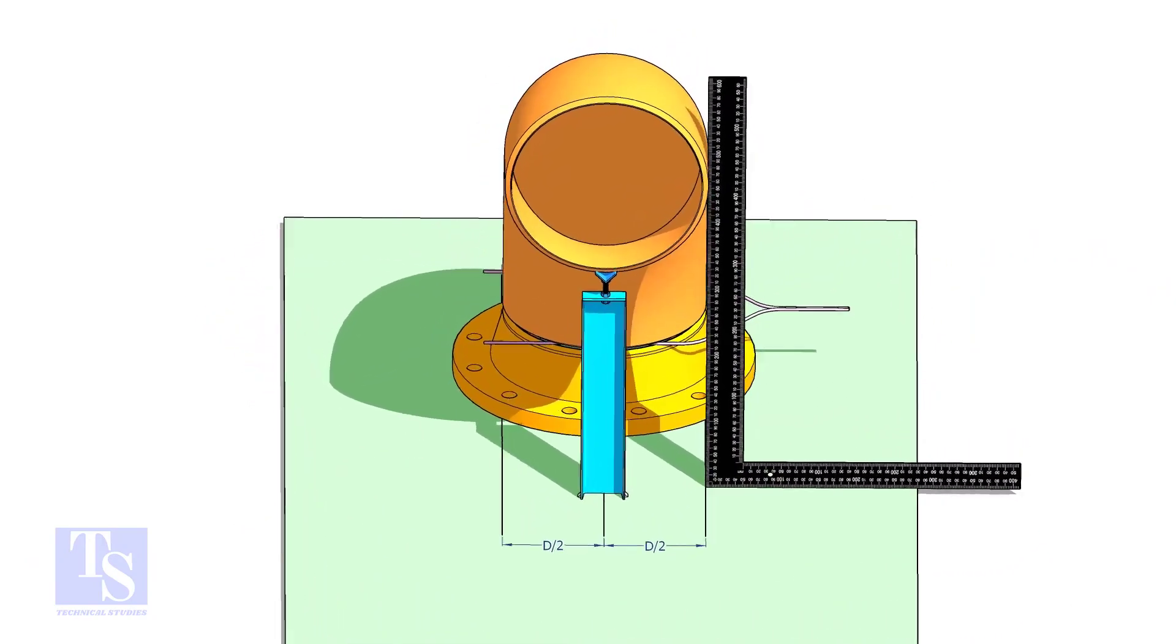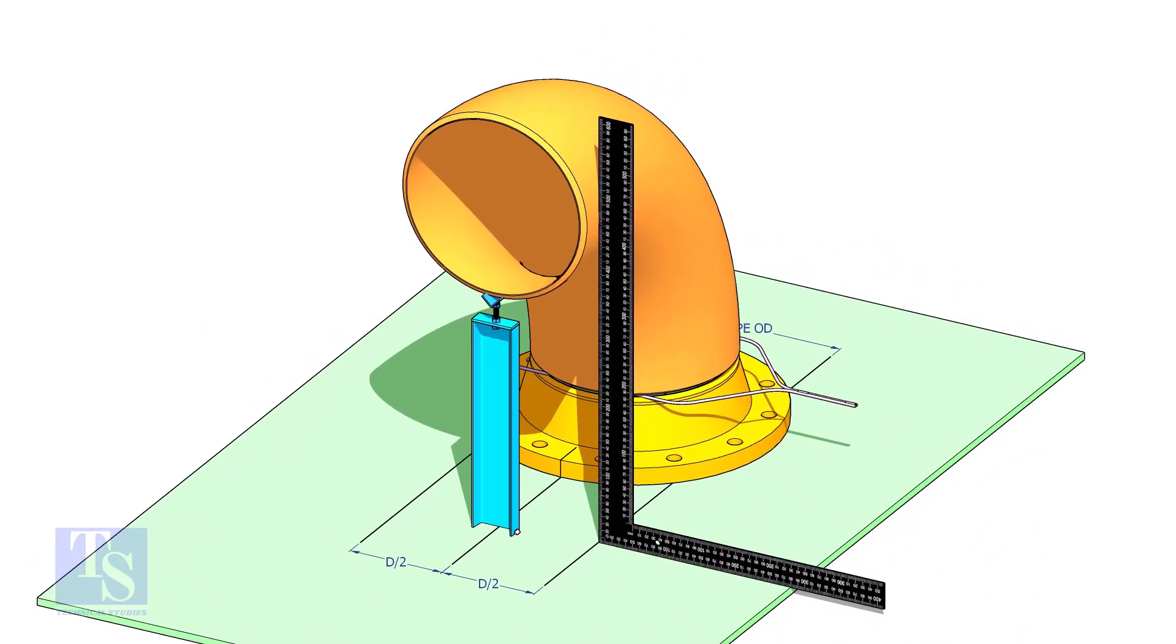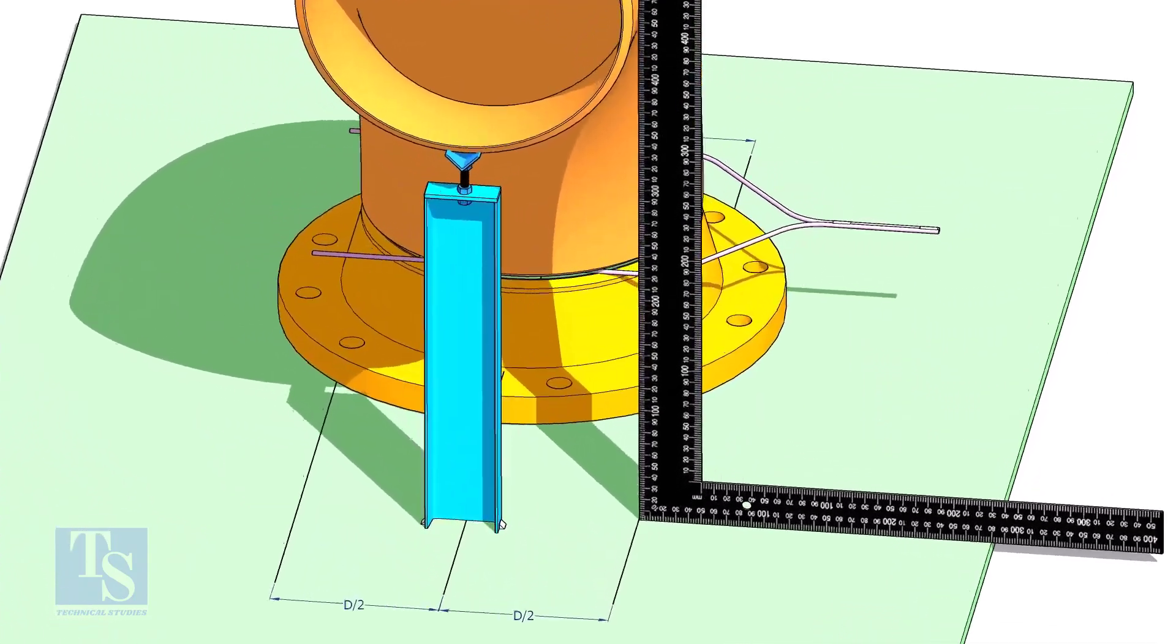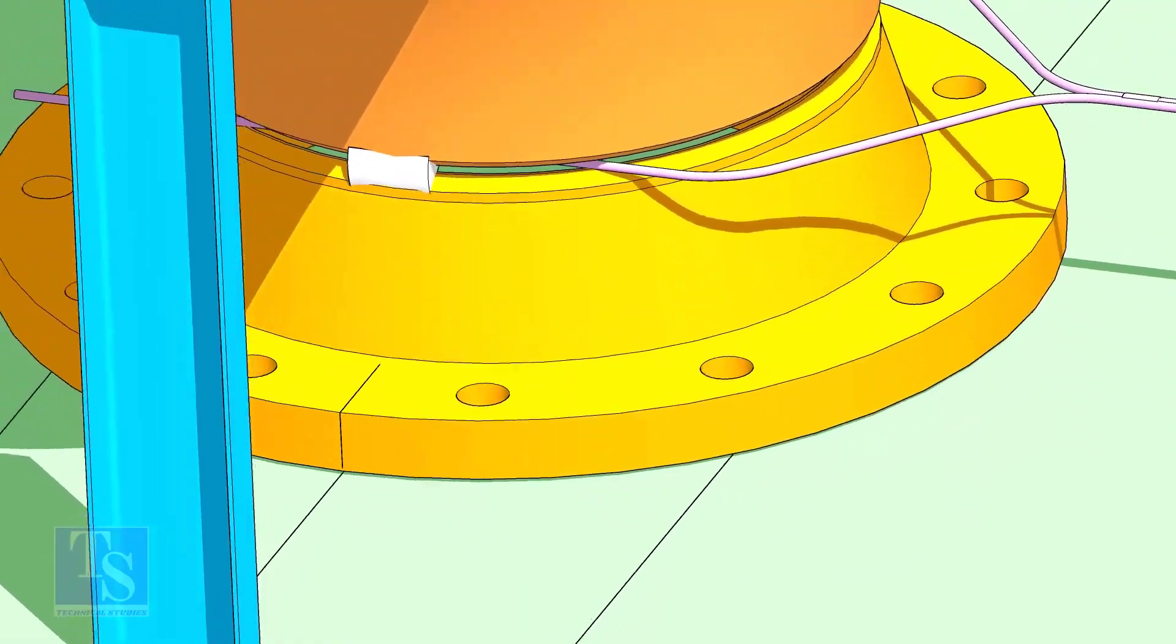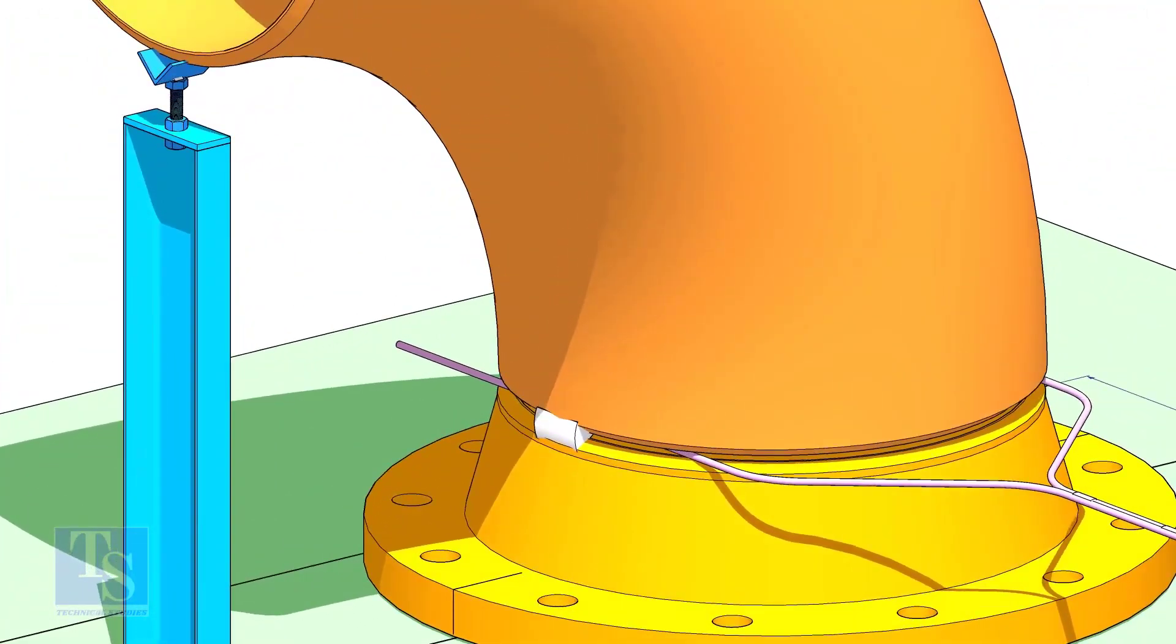Make sure the face of the elbow and the lines are parallel. Tack weld on all four sides.